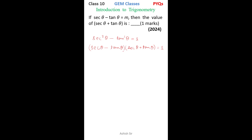Now sec theta minus tan theta equals to m. So m multiplied by sec theta plus tan theta equals 1, therefore sec theta plus tan theta equals 1 by m.